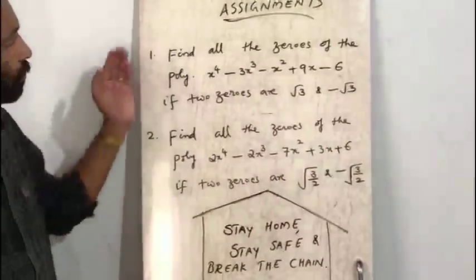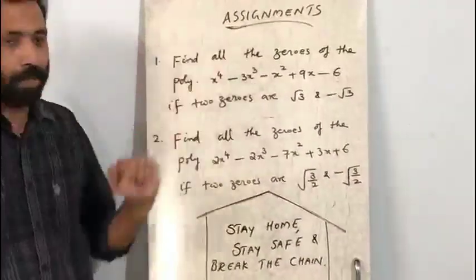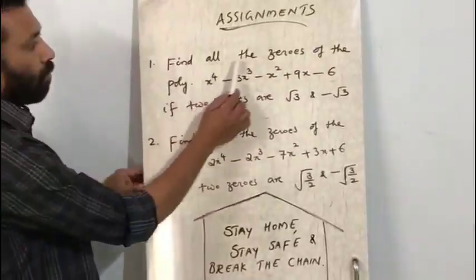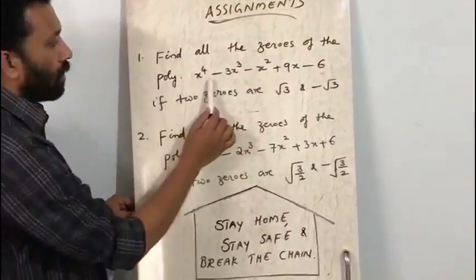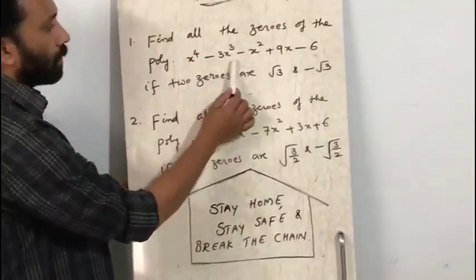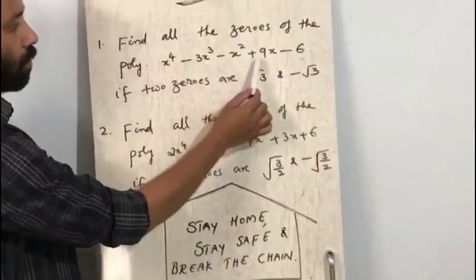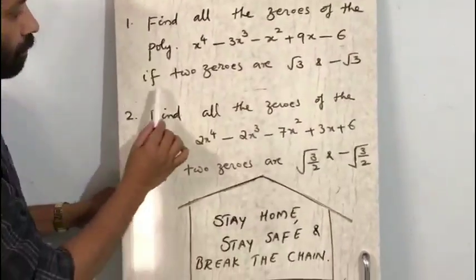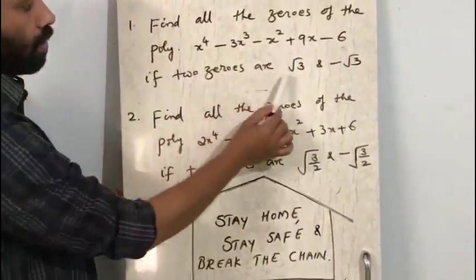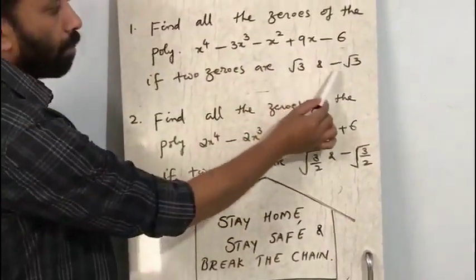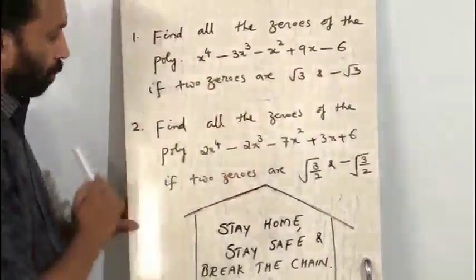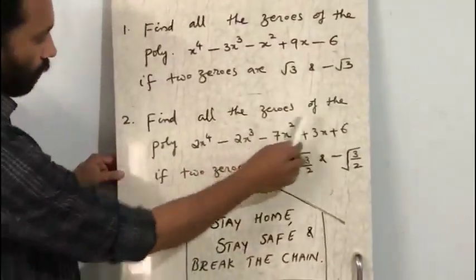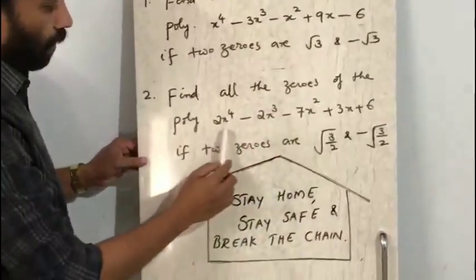Now try these two assignments. First: Find all the zeros of the polynomial x⁴ − 3x³ − x² + 9x − 6, given that two zeros are √3 and −√3.